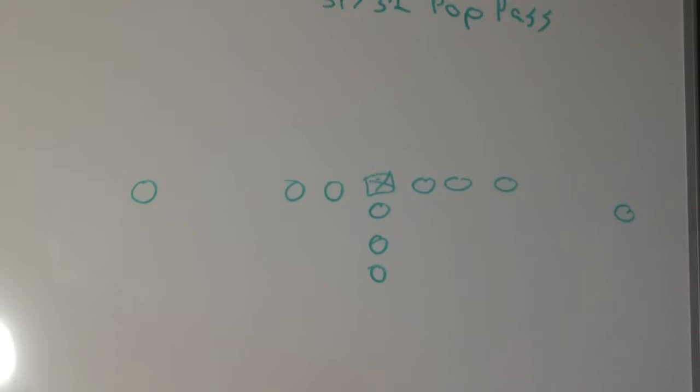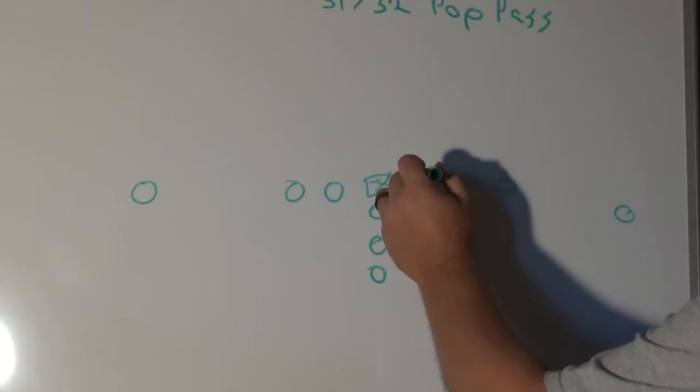Let's talk about 31 and 32 pop pass. Our action is going to be off of our 31 and 32 dodge. So we'll call this 32.